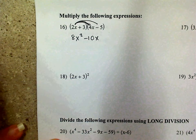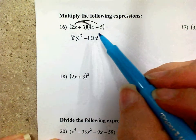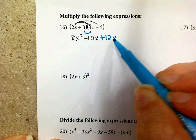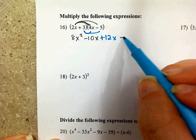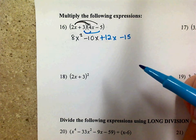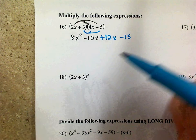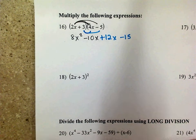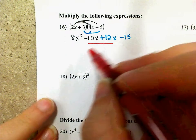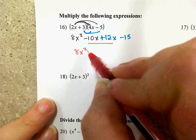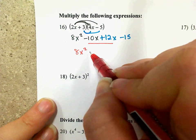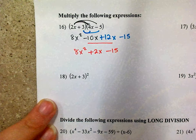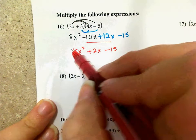Then distribute the 3. So 3 times 4x is 12x, and 3 times negative 5 is negative 15. At that point you want to combine like terms — these both have x's. So we get 8x squared plus 2x minus 15. And that is your answer.